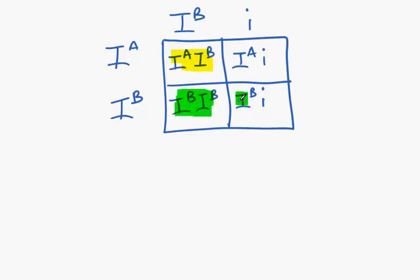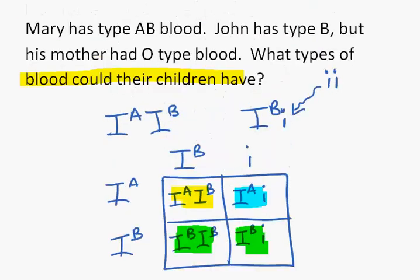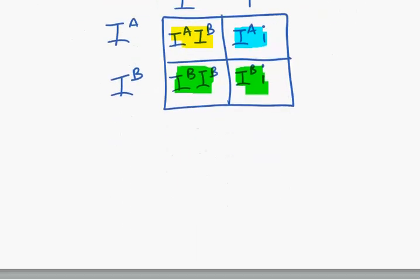These genotypes are different, but they're both B type blood and one type A. So our final answer to the question—no numbers, just what types of blood could the children have—they could be types AB, B, or type O blood.